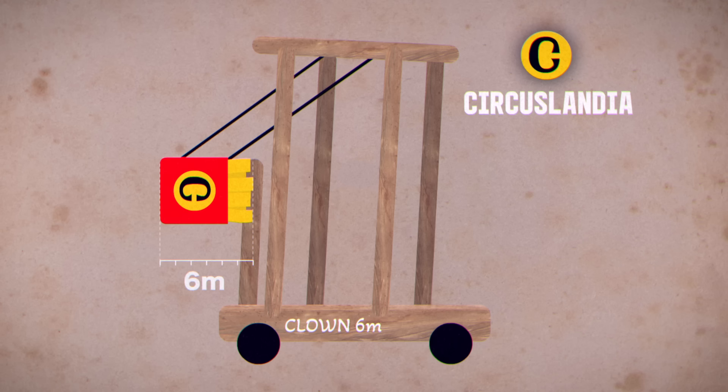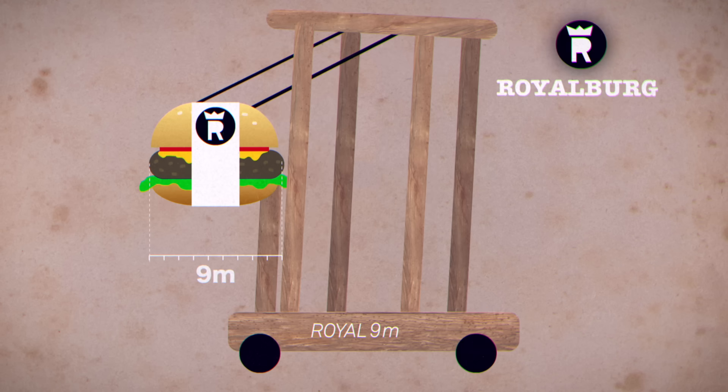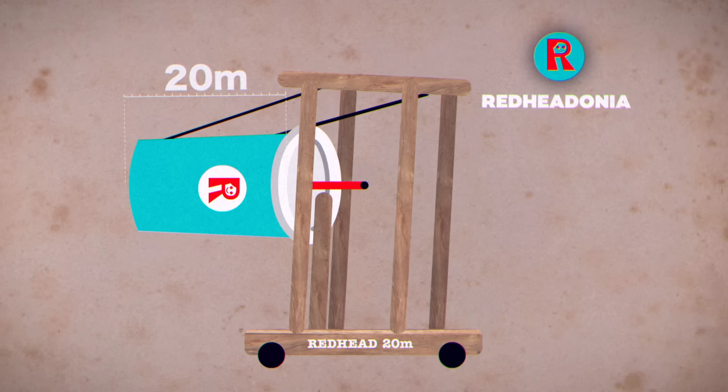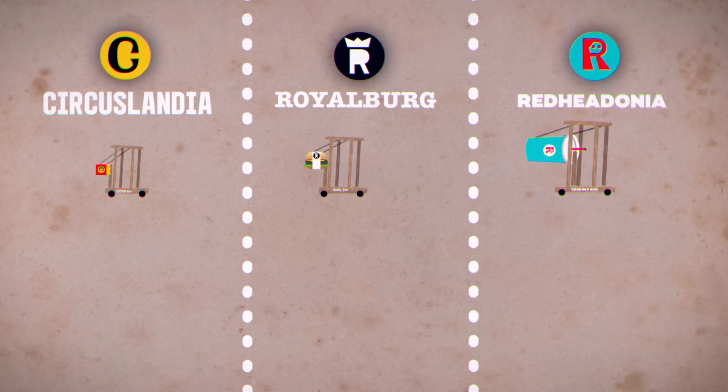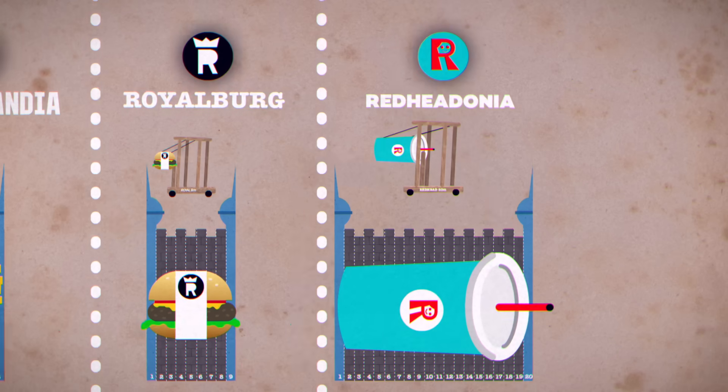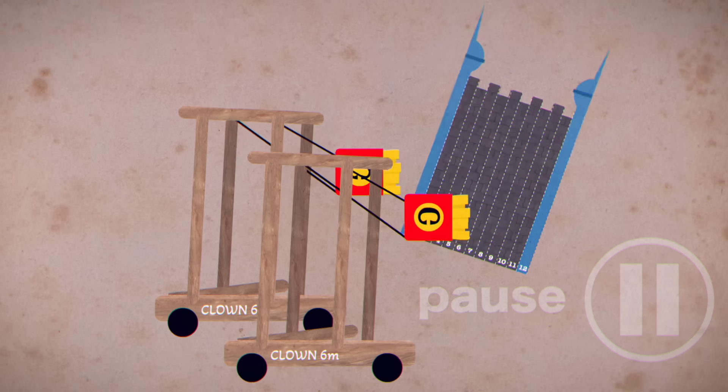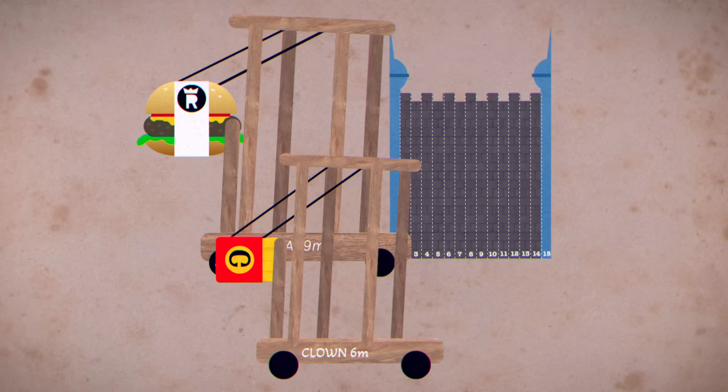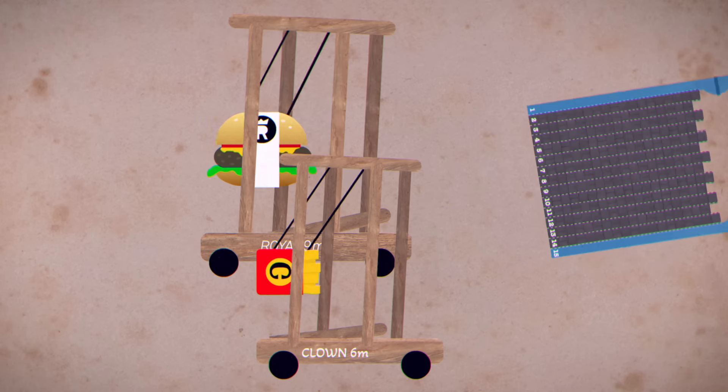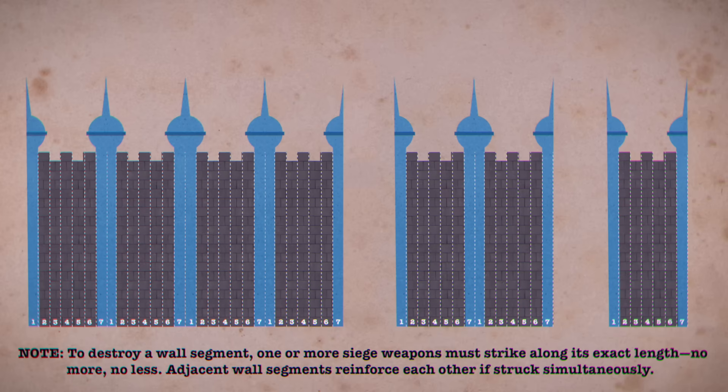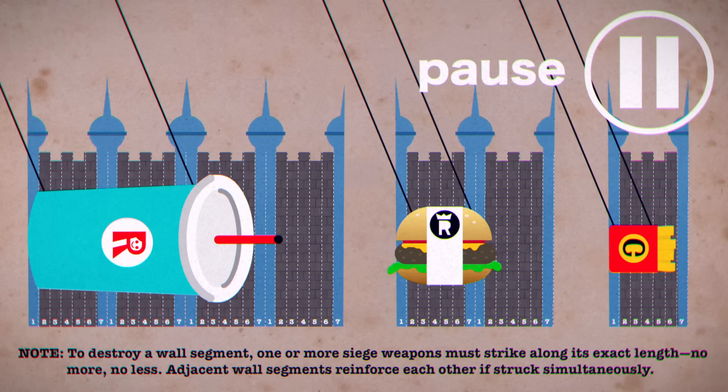The clowns are all 6 meters, the royals are 9, and the redheads are 20. Each wallbuster can level a wall segment of the matching size, and they can be combined as well. Two sixes can take out a 12-meter wall, and a 6 and a 9 could break one that's 15 meters, but a 7-meter wall would hold fast against any of them.